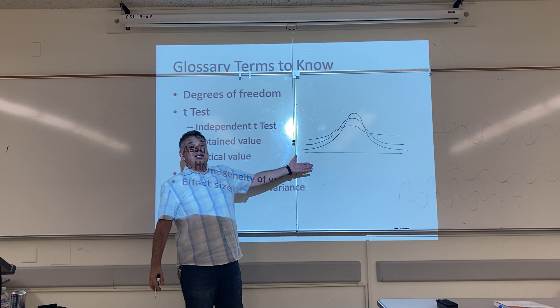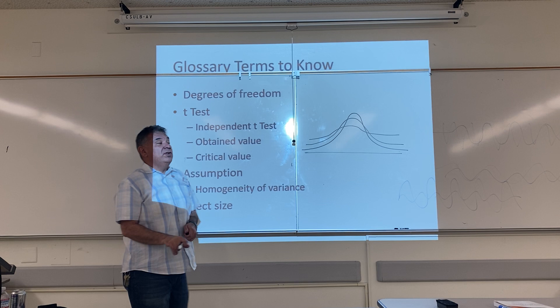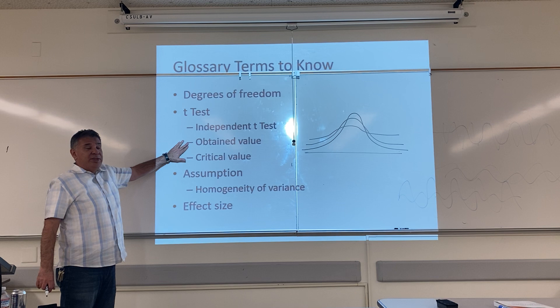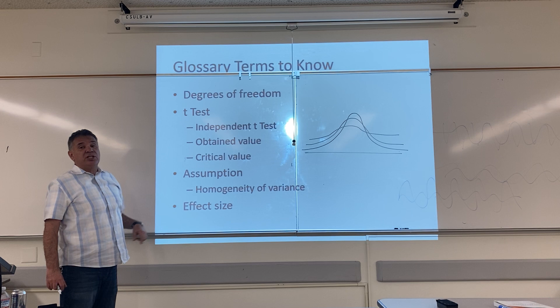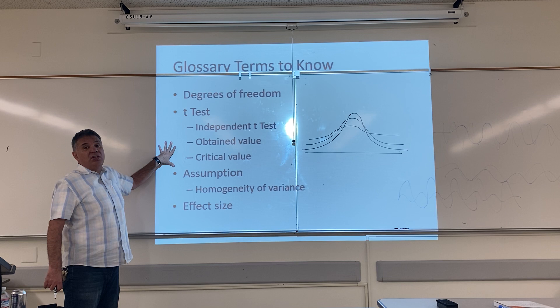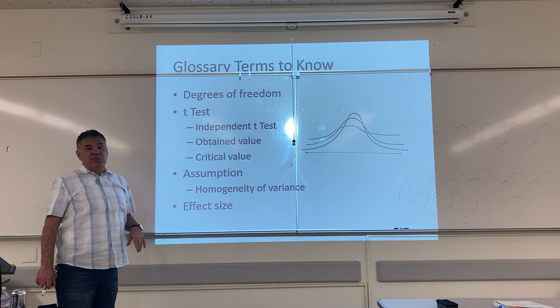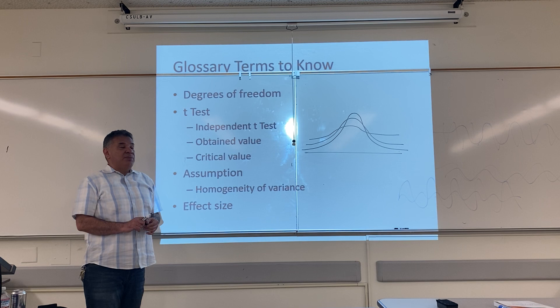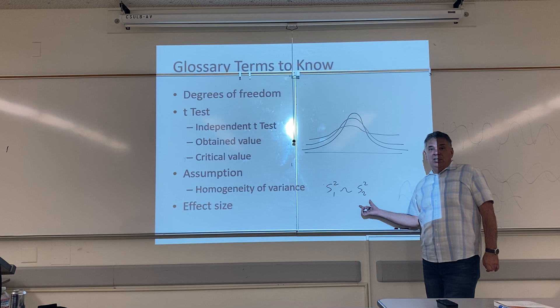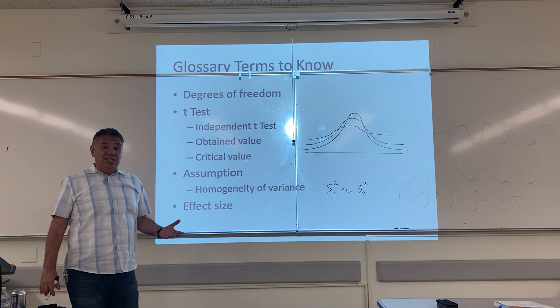That's how the t-distribution and the normal curve are related. The answer we get from the t-formula is called the obtained value, or OV for short. We compare it to a critical value, which is determined by three things: the number of tails, the size of alpha, and our degrees of freedom. We can only trust the results when we follow the assumptions. The t-test has a major assumption called homogeneity of variance, which states that the variance of the first group is about the same as the variance of the second group. The last thing we covered was effect size — effect sizes come in shirt sizes: small, medium, and large.